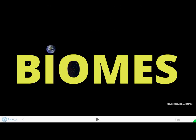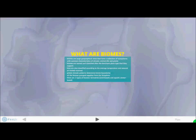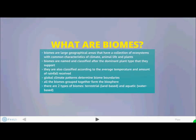This is our project on Canadian and World Biomes. Biomes are geographical regions with similar ecosystems and climates. They are classified by plants in the region and by average precipitation and temperature. There are two types of biomes: terrestrial and aquatic.